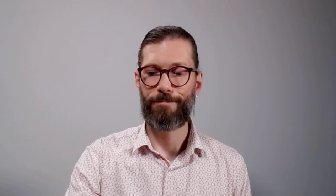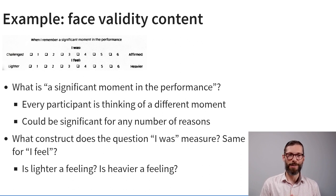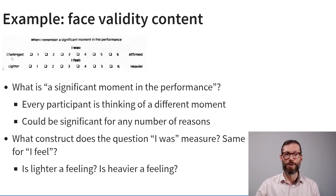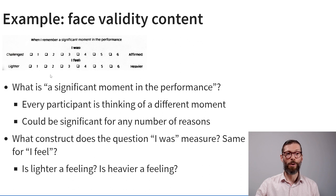This second question has lower face validity because it is ambiguous — it's essentially a conjunction of two distinct statements. Another aspect of face validity is whether the answer categories are clearly labeled, consistent, and unambiguous. Here's an example: I took a picture of a questionnaire handed out at a theater performance in the United States. The second question asks 'when I remember a significant moment in the performance, I was' on a six-point Likert scale from 'challenged' to 'affirmed,' and 'I feel' on a scale from 'lighter' to 'heavier.'